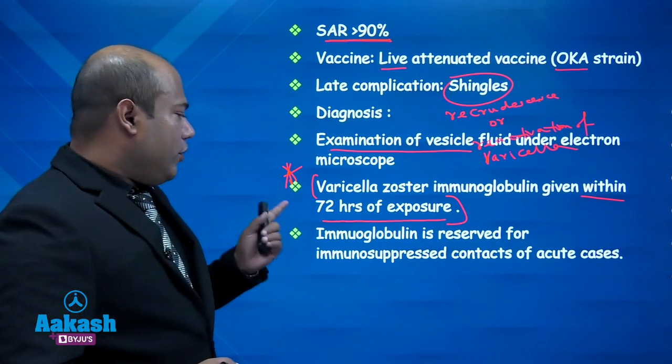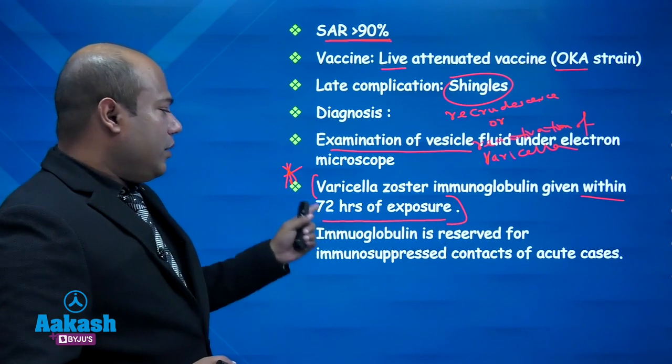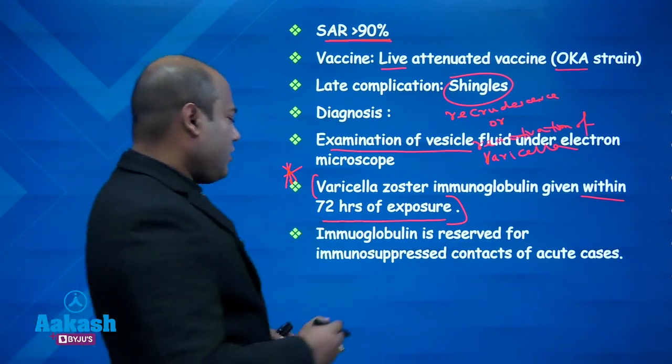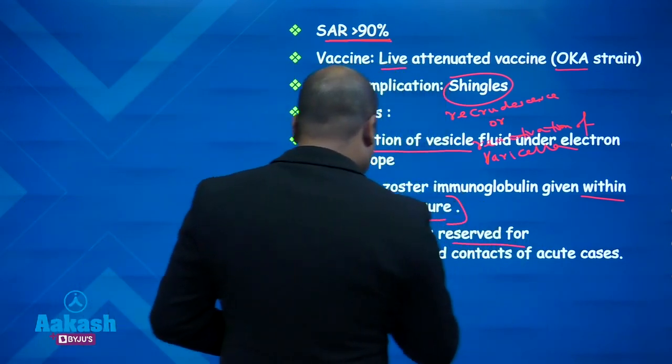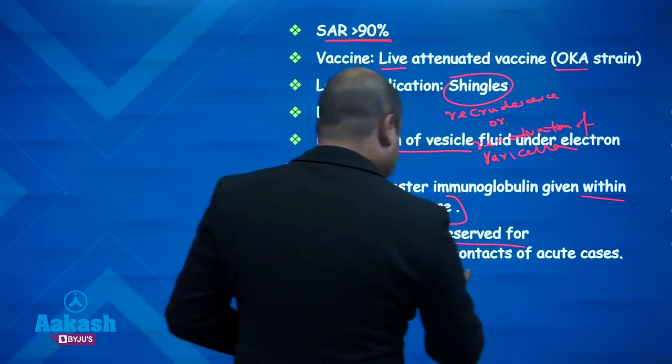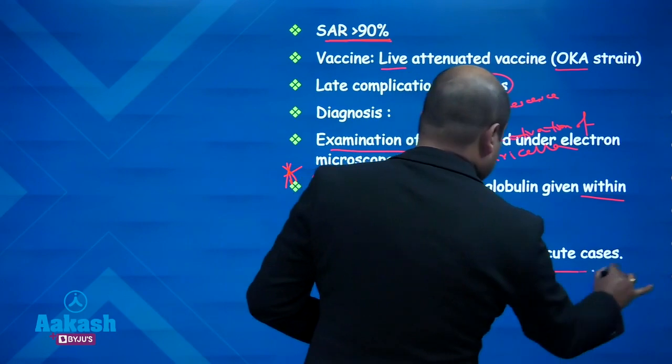Varicella zoster immunoglobulin is reserved for immunosuppressed contacts of acute cases.